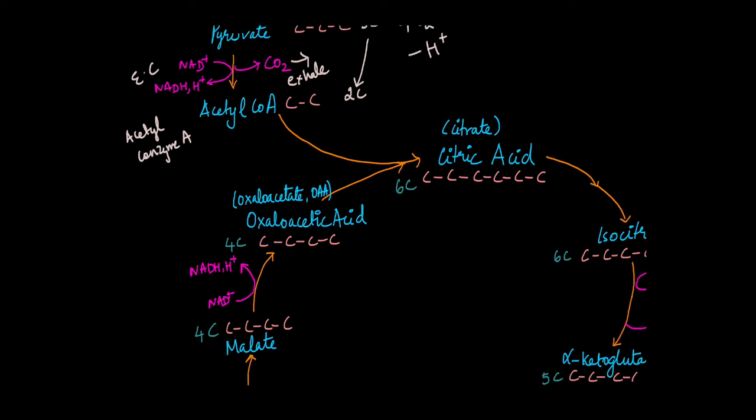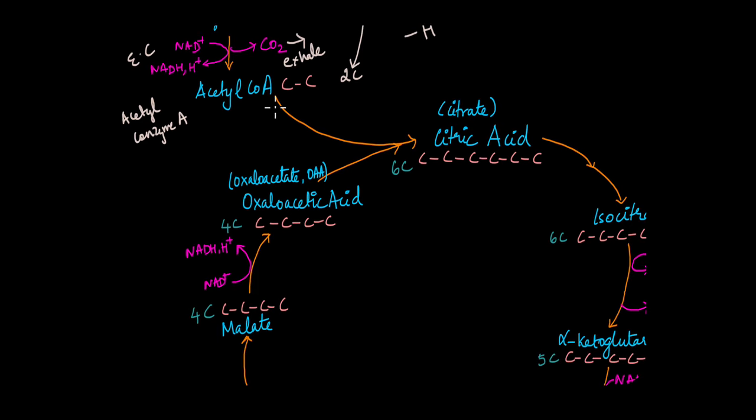And Krebs cycle involves this acetyl-CoA reacting with a four-carbon compound called oxaloacetic acid to give the first product which is the citric acid. That's why it's called the citric acid cycle. Citric acid is a six-carbon compound. It's also called as citrate.